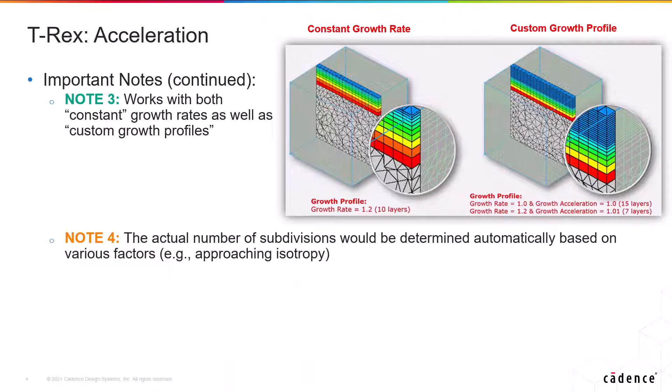Also, as we saw earlier, the actual number of subdivisions would be determined automatically by the solver depending on various factors. Therefore, if you choose, for example, layer subdivisions of 5, it doesn't mean that Fidelity Pointwise will continue to jump 5 layers at a time. And in fact, that number will be automatically reduced down to 1 as the front approaches isotropy.